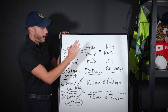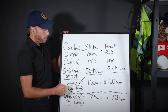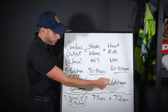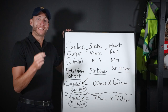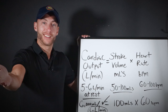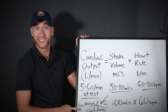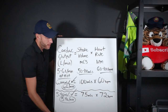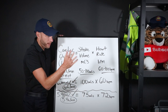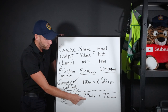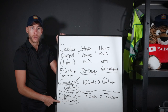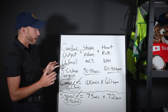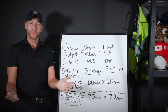Here are two example equations. First: stroke volume of 100 mLs times a heart rate of 60 gives 6,000 mLs, which equals 6 liters per minute cardiac output. Second: 75 mLs times 72 beats per minute equals 5,400 mLs, which is 5.4 liters per minute. If you're given any two of the three values, you can fill in the gap.